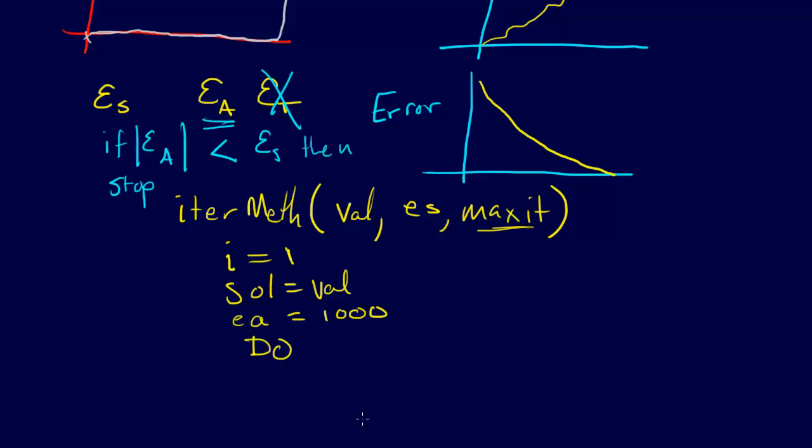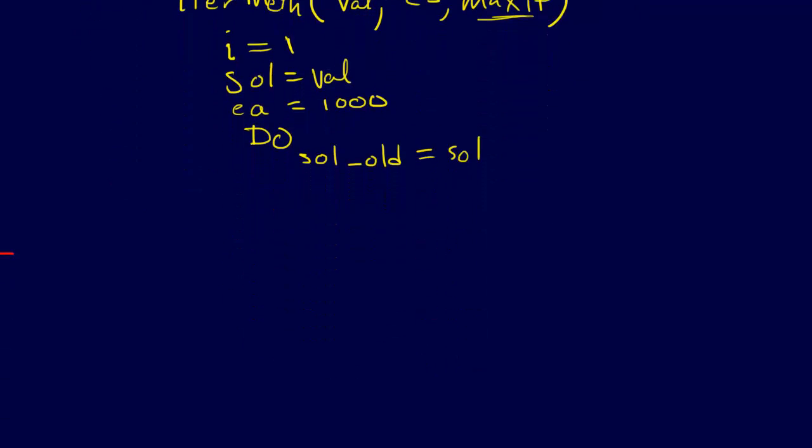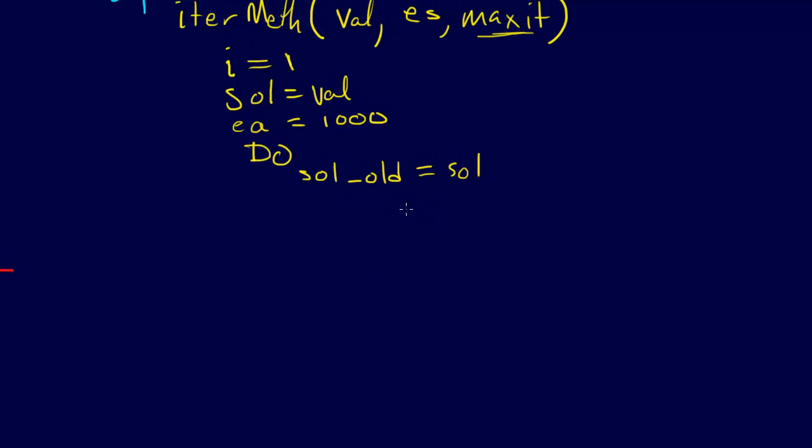Okay. We have this do loop, where, where we have the old solution, the old solution, is equal to the solution. And, that's just, let's scroll down here. The old solution is equal to the solution. This just gets at the solution, is equal to whatever. This is where we, this is where we do fancy stuff.